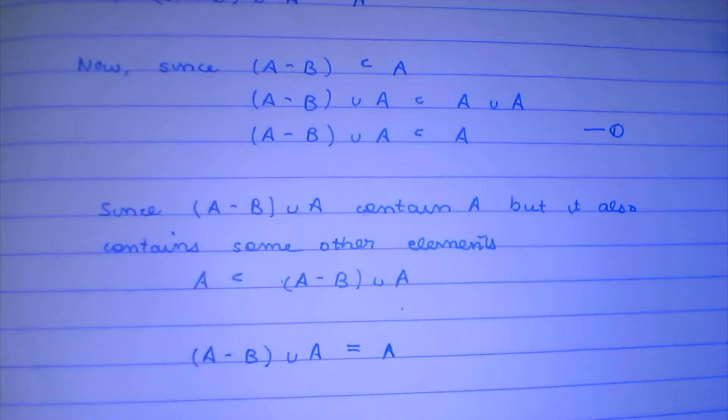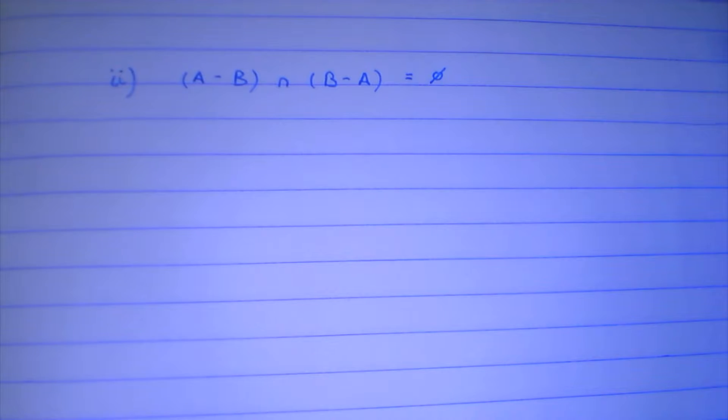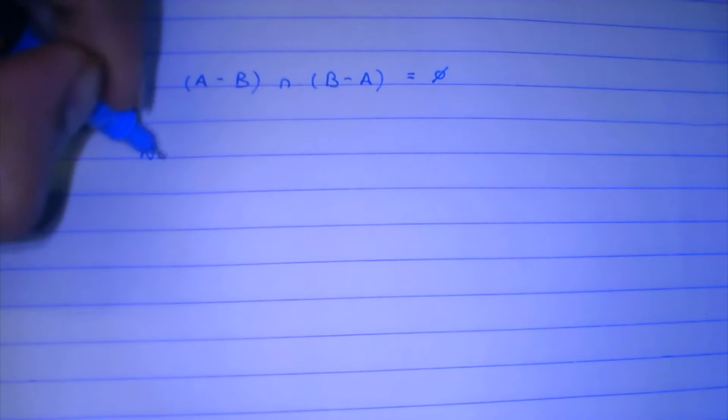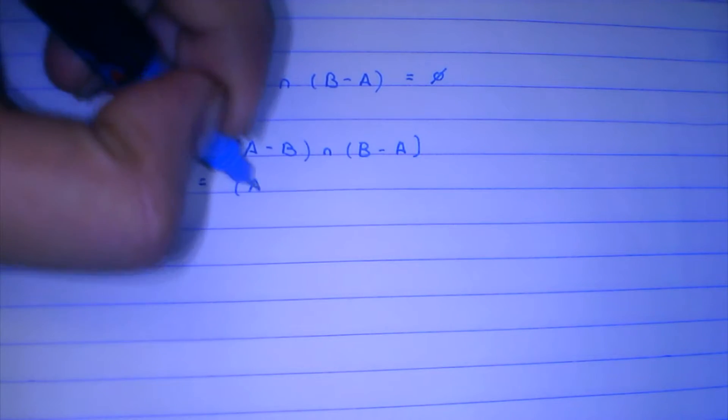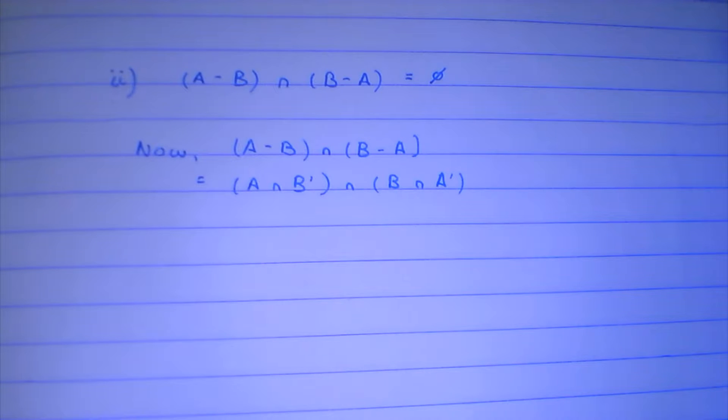Moving on to the next identity, we have to prove that (A minus B) intersection (B minus A) is equal to phi. If you think about it closely, A minus B and B minus A have nothing in common. We take the LHS: (A minus B) intersection (B minus A), which is equal to (A intersection B complement) intersection (B intersection A complement). This is basically the definition of the symmetric difference.